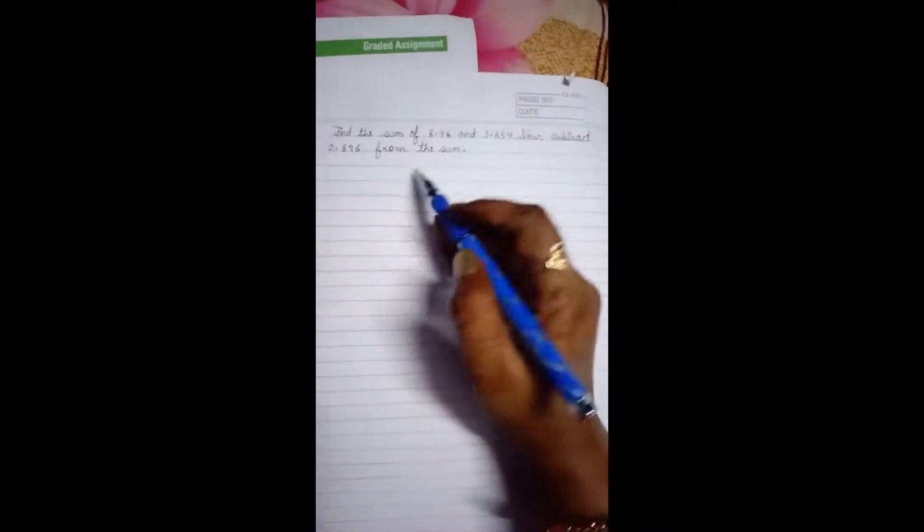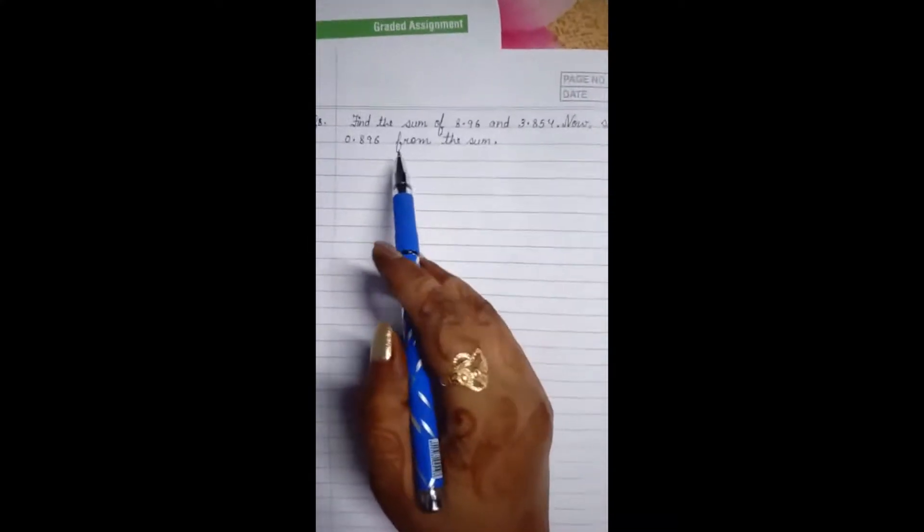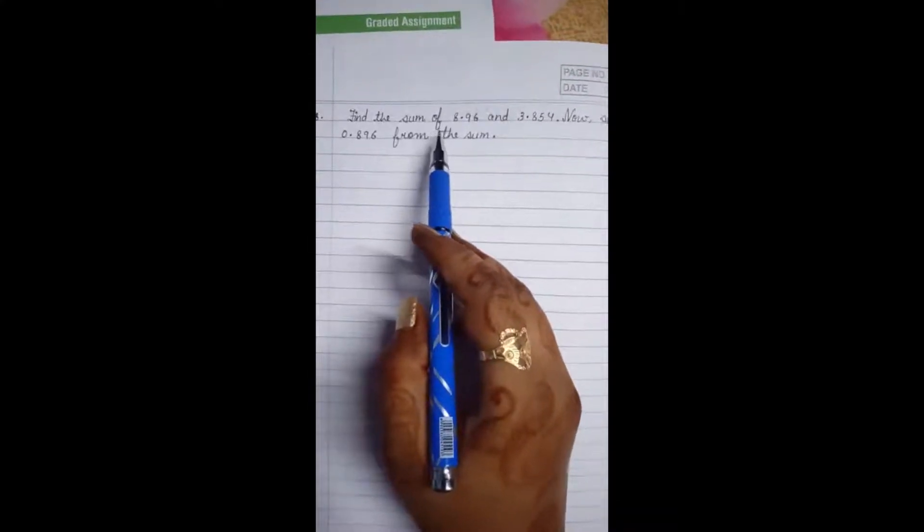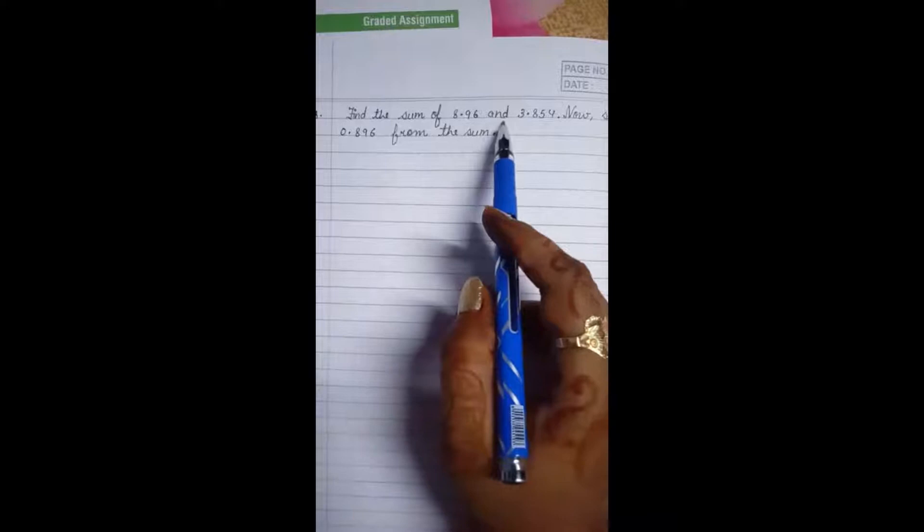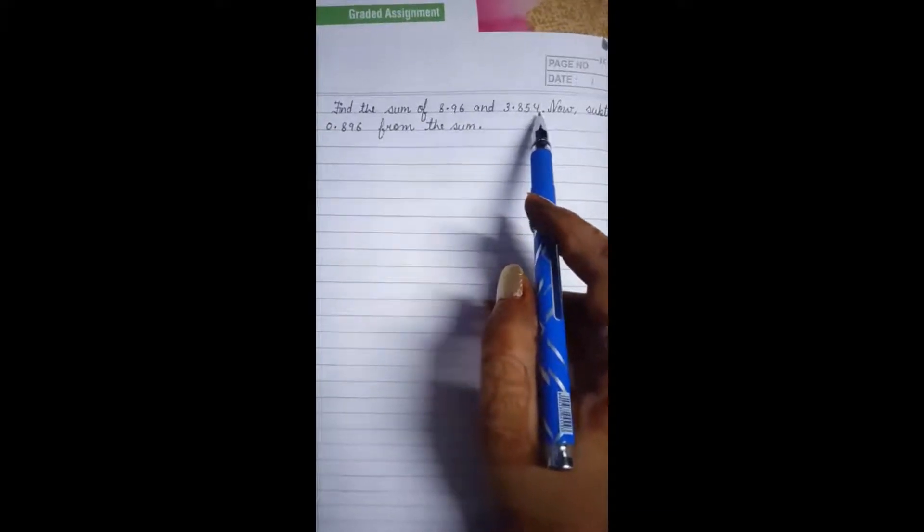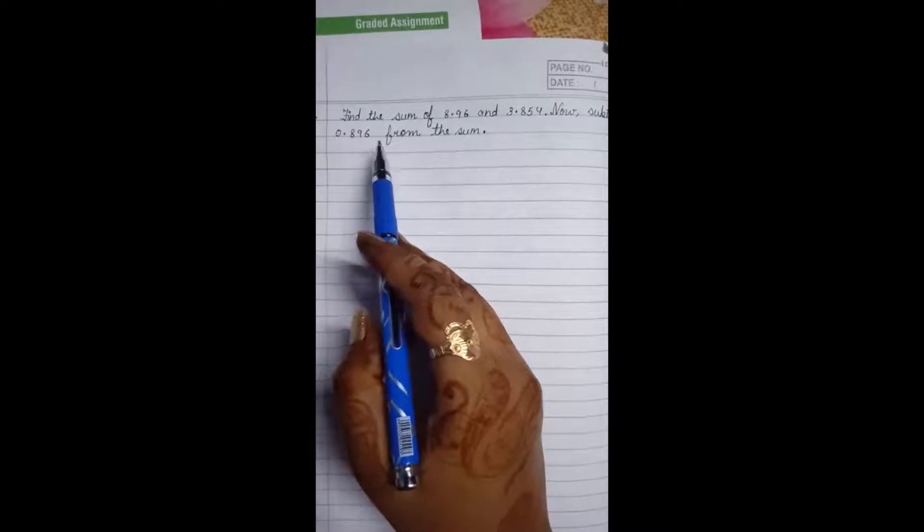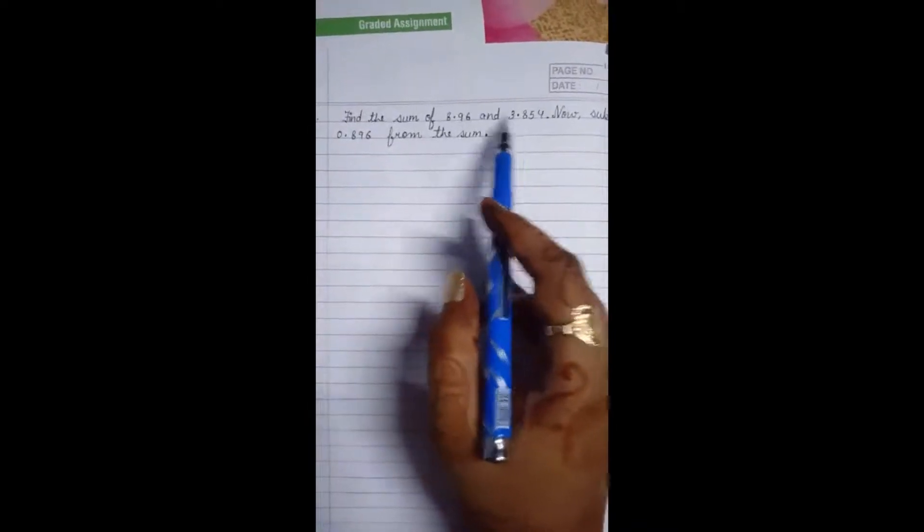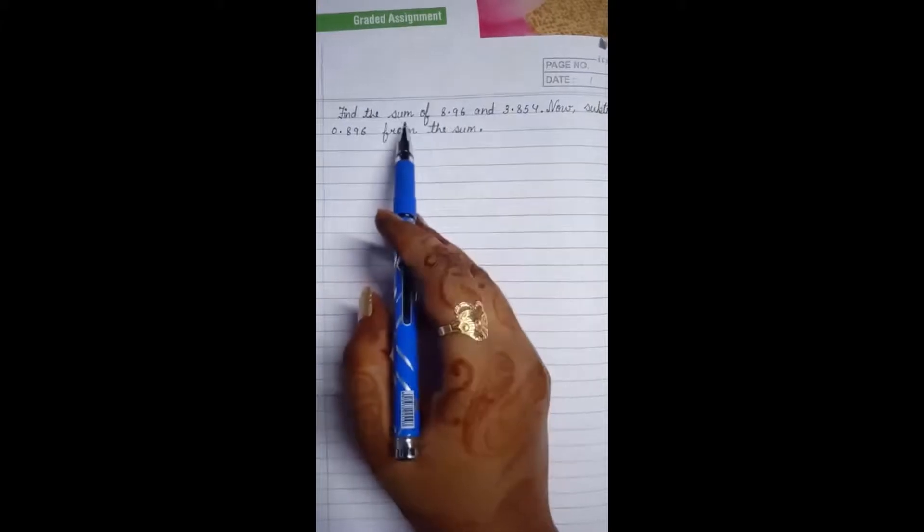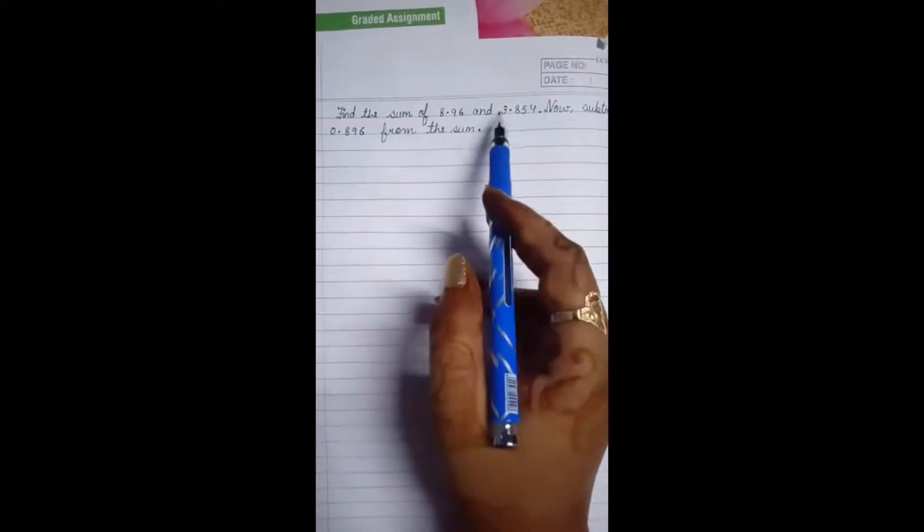The next problem is question number 8. The question is find the sum of 8.96 and 3.854, then subtract 0.896 from the sum. First of all we have to add these numbers. As sum is being asked, sum means the result of addition. So here we have to add it.